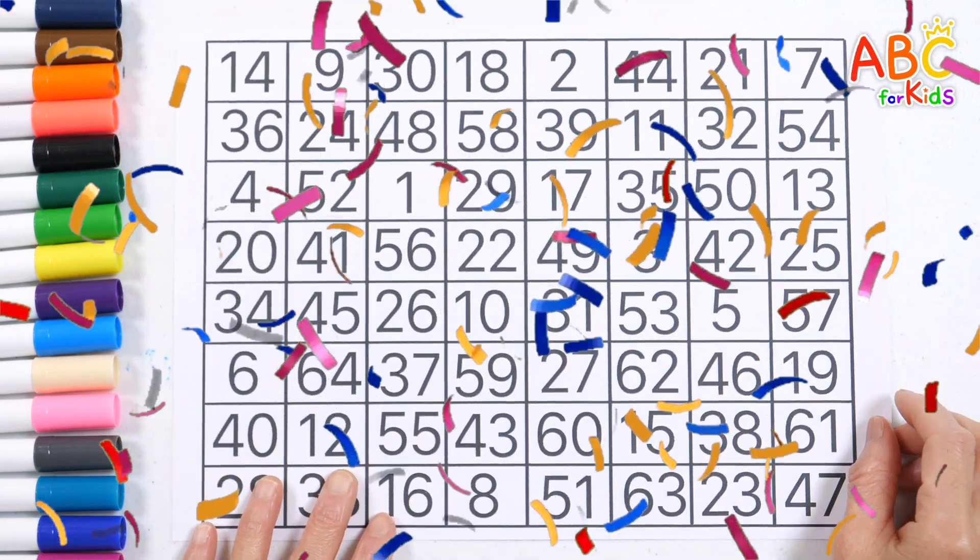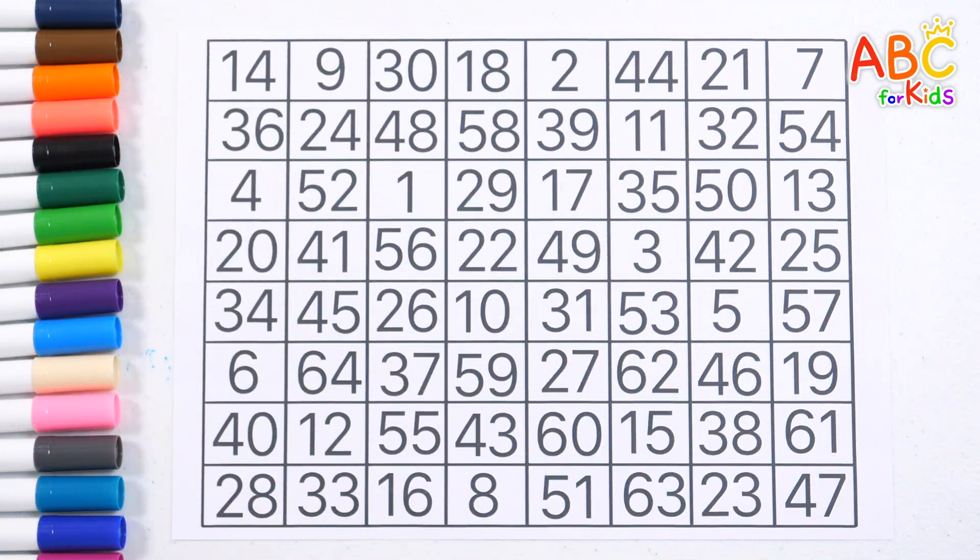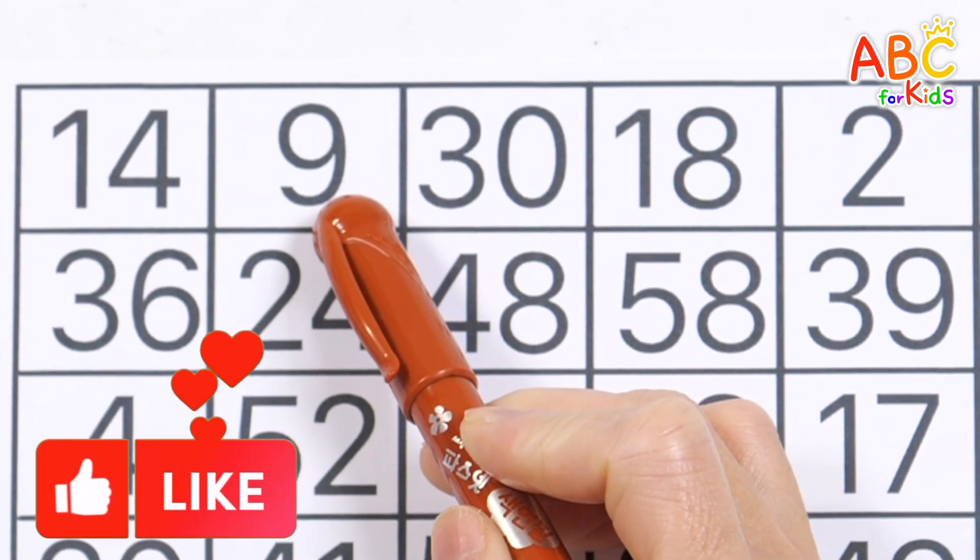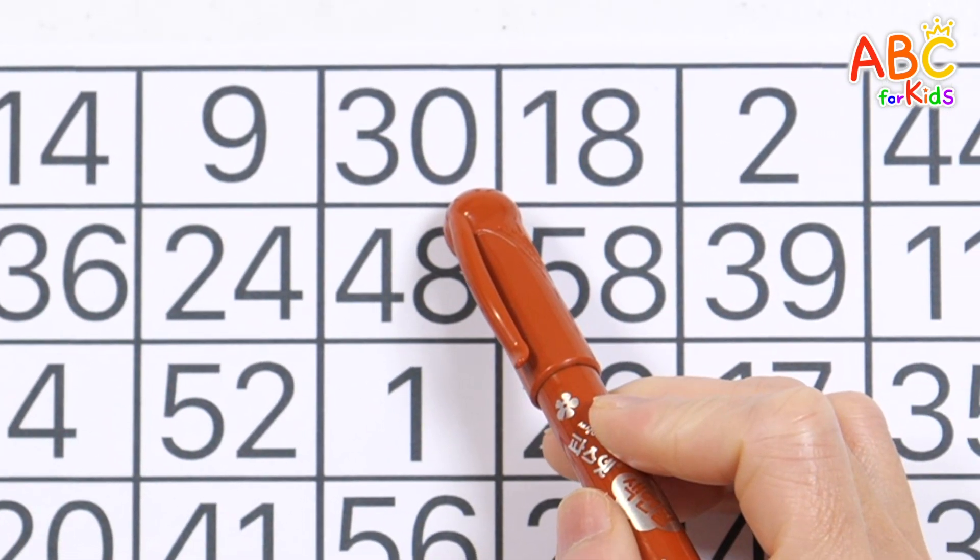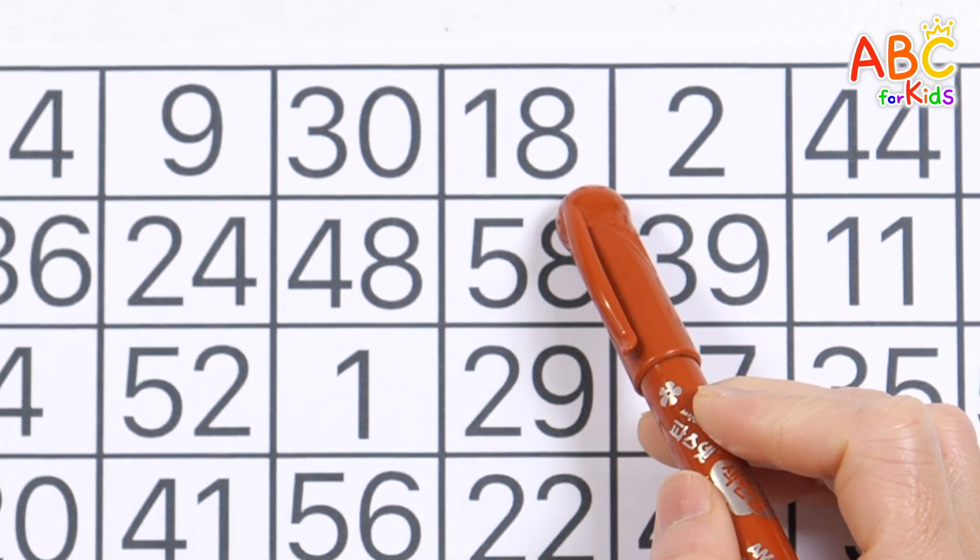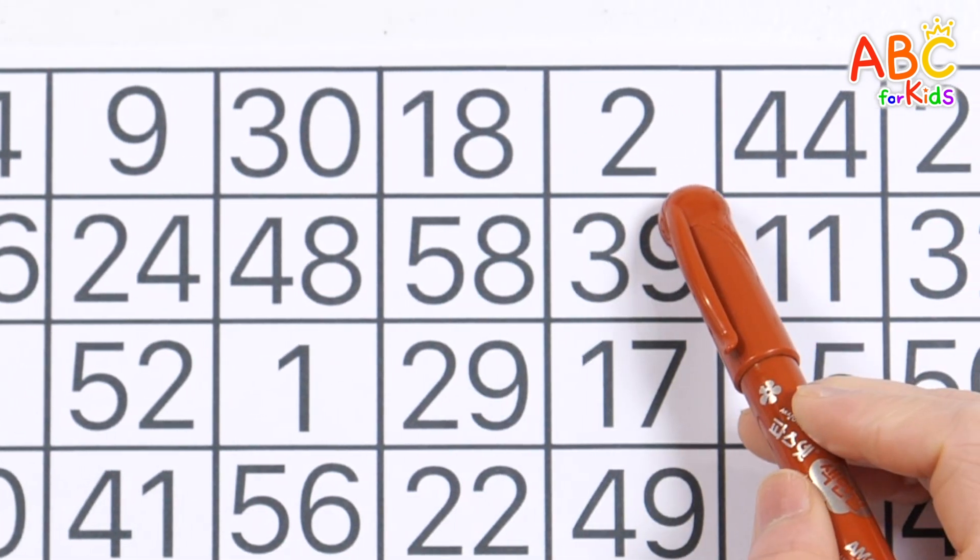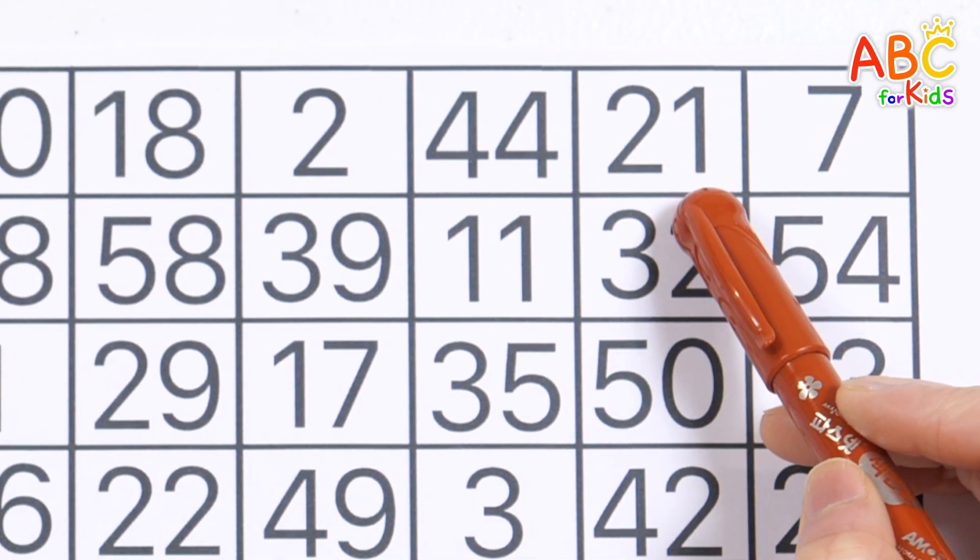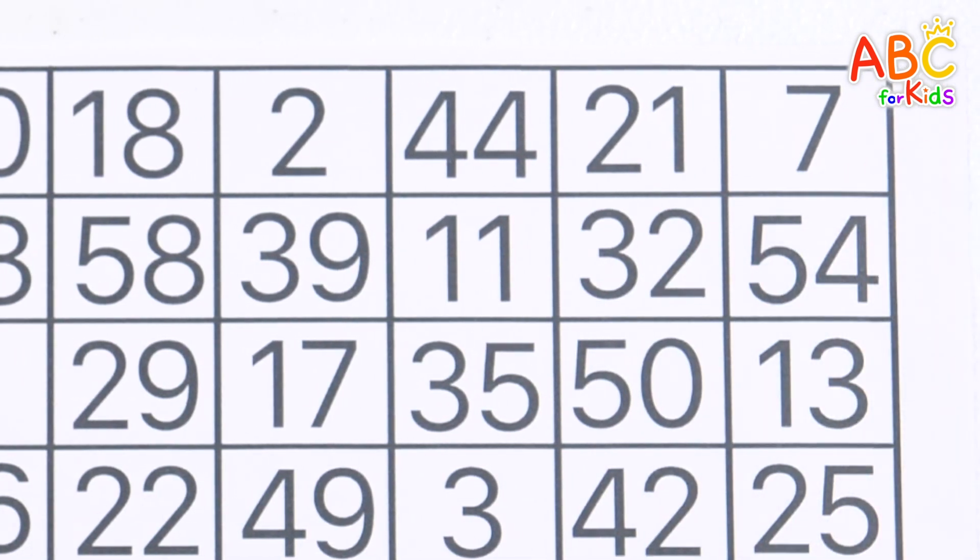Let's practice reading numbers by reading the numbers one by one. 14, 9, 30, 18, 2, 44, 21, 7. Good job!